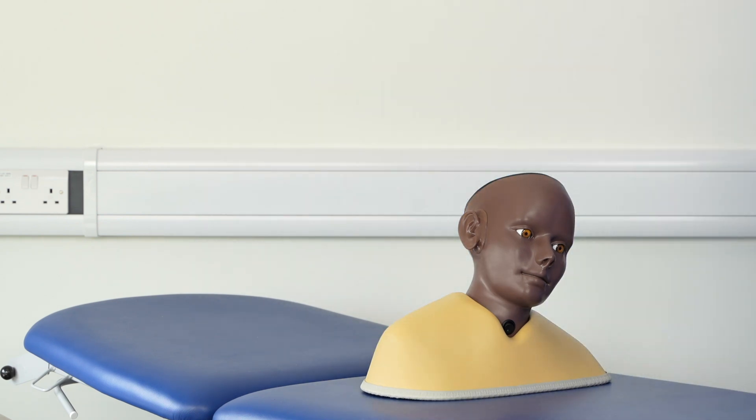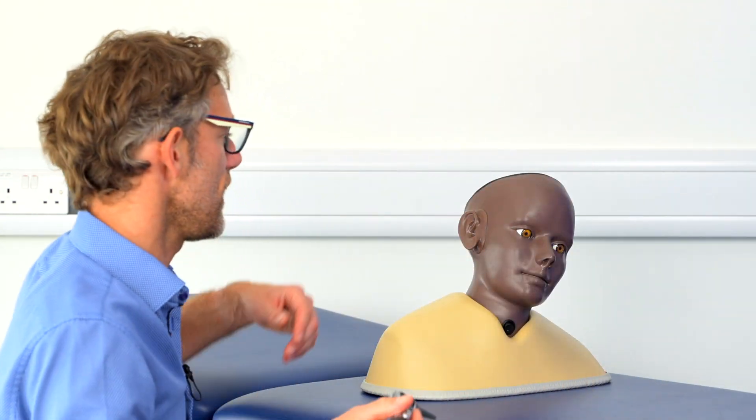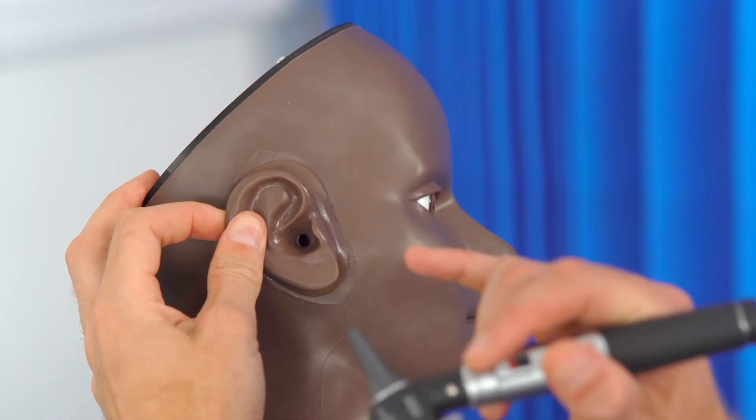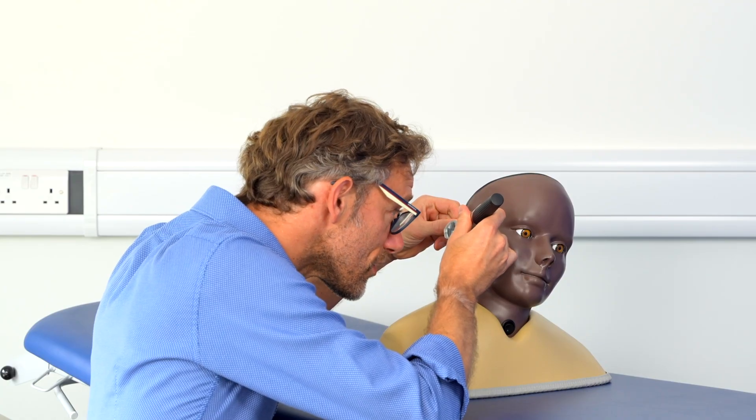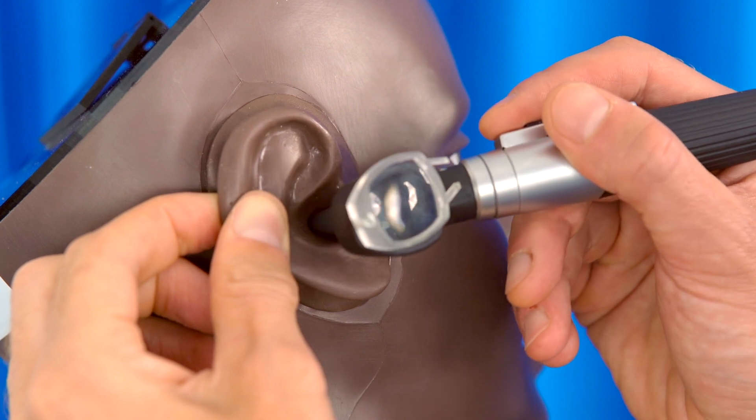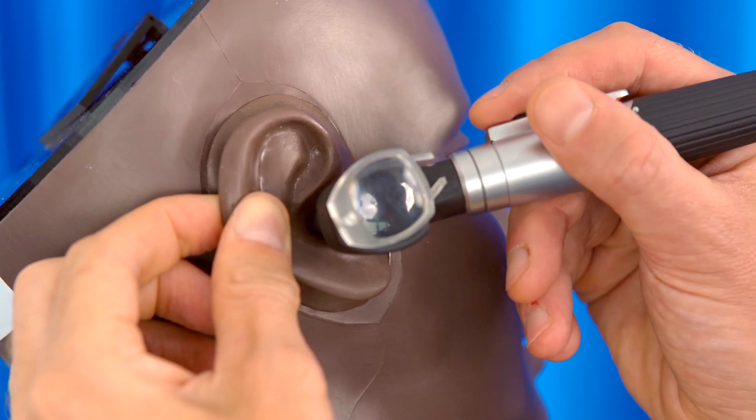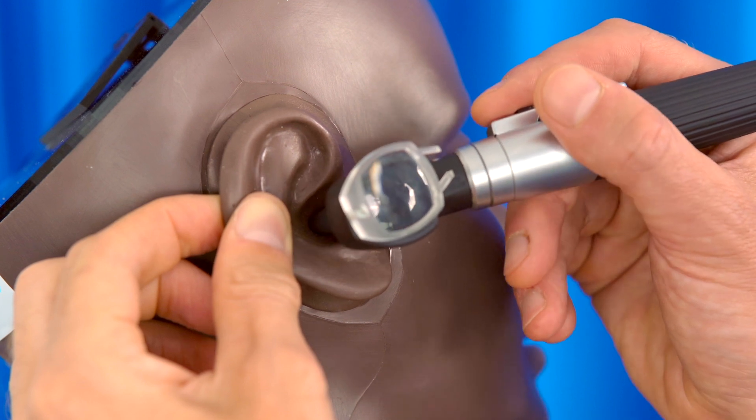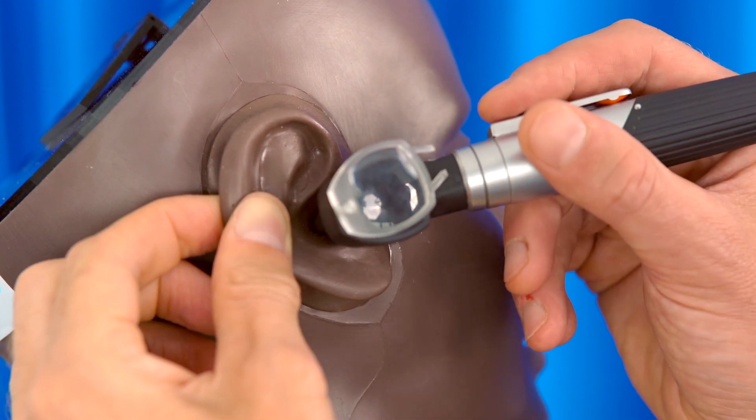I'm going to come back with the otoscope, and now we're going to have a look within the ear. So I'm just going to stabilize your face, pulling the ear back, and inserting the otoscope. So having a look inside, I can see a normal tympanic membrane. There's a normal light reflex. I can't see any fluid behind, no evidence of scars. There are no problems with the ear canal.